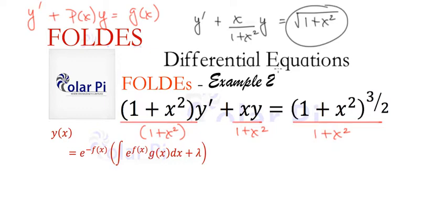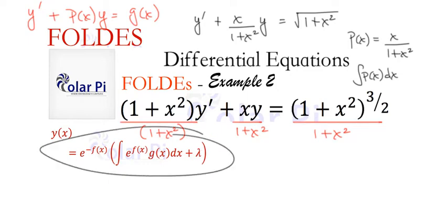So we see that g(x) is root 1 plus x squared, and then we see that P(x) is this. P(x) is equal to x over 1 plus x squared, which means that f(x) here and here is the integral of P(x). That's how we named f(x) when we derived this formula in Example 0.